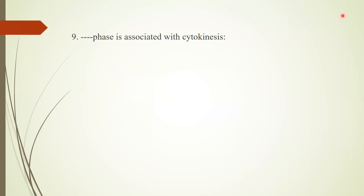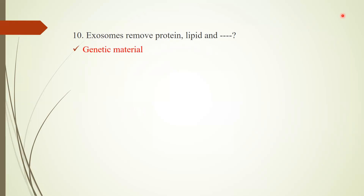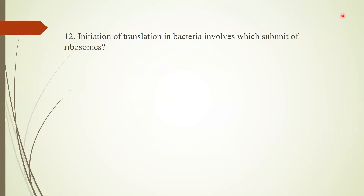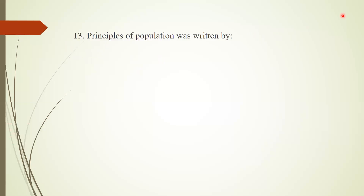Question 8: Change in allele frequency in a population over time is called genetic drift. Question 9: Which phase is associated with cytokinesis? Answer: mitotic phase. Question 10: Exosomes remove protein, lipid, and what? Answer: genetic material. Question 11: Mitosis starts after which phase? Answer: G2 phase.